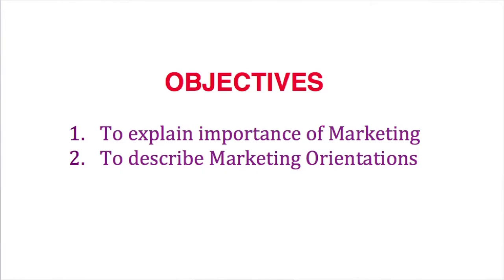We have already discussed the five learning objectives. We shall now discuss the importance of marketing, and then we shall discuss the various marketing orientations, because marketing is conducted under certain philosophies. It could be selling philosophy, production philosophy, holistic marketing philosophy, or product philosophy. We shall come to know about the various kinds of orientations or philosophies by which a marketer executes the marketing function.